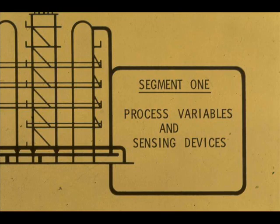Measurement and control of process variables play a most important part in our operations. Safety and efficiency of operations, as well as rigid product specifications, require accurate measurement and control. In Segment 1, you will learn about process variables and sensing devices.